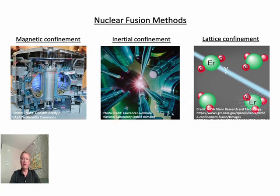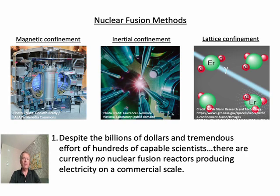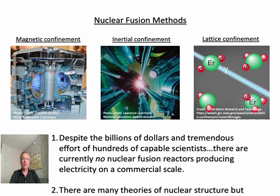The structure of the atomic nucleus is directly relevant to nuclear fusion, but here we can agree on two things. First, that despite billions of dollars and tremendous efforts of hundreds of capable scientists, there are currently no fusion reactors producing electricity on a commercial scale. Secondly, there are many theories of nuclear structure, but no general agreement on any one model. In lattice confinement, for instance, on the right, the various nuclei are represented simply as colored spheres, and hydrogen is a faint gaseous cloud in the lower right of the panel. Here we will show that the structure and orientation of the deuteron have a major impact on fusion reaction kinetics.